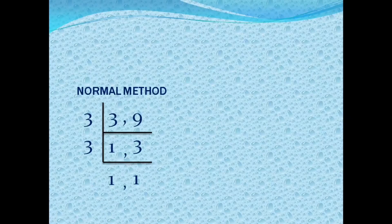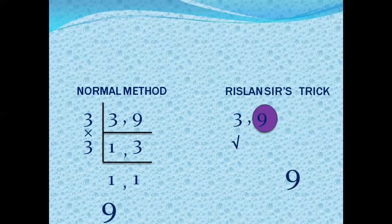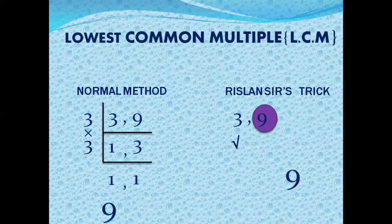Normal method gives 3 times 3 = 9. According to my method, for 3 and 9, take the largest number which is 9. Check if 9 can be divided by the smallest number 3 — yes it can. So the LCM is the largest number, which is 9.